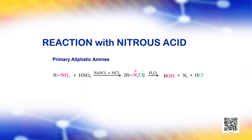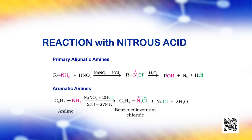Three classes of amines react differently with nitrous acid, which is prepared in situ from a mineral acid and sodium nitrite. Primary aliphatic amines react with nitrous acid to form aliphatic diazonium salts which, being unstable, liberate nitrogen gas quantitatively and produce alcohols. Quantitative evolution of nitrogen is used in the estimation of amino acids and proteins. Aromatic amines react with nitrous acid at low temperatures of 273 to 278 Kelvin to form diazonium salts, a very important class of compounds used for synthesis of a variety of aromatic compounds.